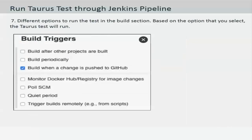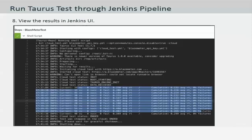Jenkins can also run each of these test cases automatically. You can configure how the test runs in the build section. For example, the test runs each time a change is pushed in GitHub — whenever you change the concurrency, the test will automatically run again and you should be able to view the results within the Jenkins UI.